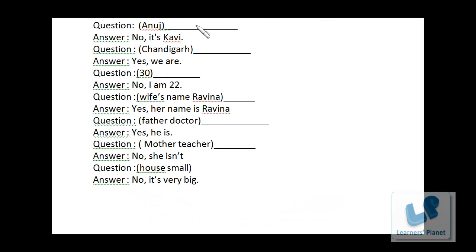We are supposed to put the question while the answer is given. Is your name Anuj? — No, it's Covey. Are you from Chandigarh? — Yes, we are. Are you 30 years old? — No, I am 22. Is your wife's name Raveena? — Yes, her name is Raveena. Is your father a doctor? — Yes, he is. Is your mother a teacher? — No, she isn't. Is your house small? — No, it's very big. The questions we formed were matching to the answers, meaning the answers gave the sense of the question. One more exercise comes to an end and we'll go to the next one.